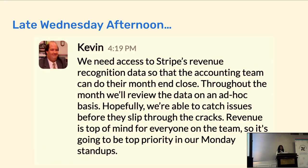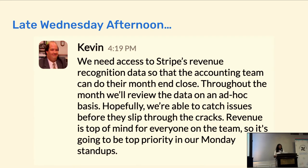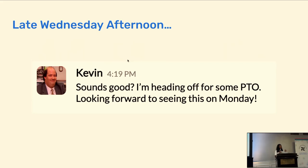Kevin comes back and says: we need to access Stripe's revenue recognition data so that the accounting team can do their month-end close. Throughout the month, we'll review the data on an ad hoc basis, and hopefully we're able to catch any pressing issues before they've gone on for too long. Revenue is very top of mind for the accounting team, especially higher up. During their Monday standups, they're going to want to review that data to spur conversation. But before you can ask Kevin more questions, he says: 'By the way, I'm out for PTO. I will see you on Monday.'